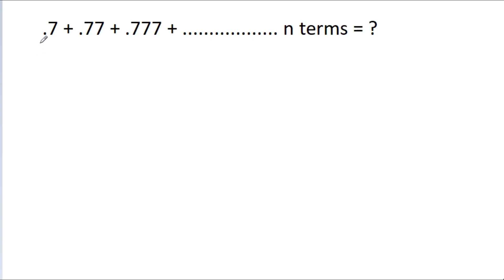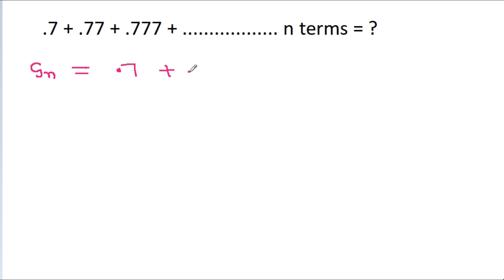In this video, we have to find the value of 0.7 plus 0.77 plus 0.777 plus up to n terms. So if we take S_n equal to 0.7 plus 0.77 plus 0.777 plus up to n terms,